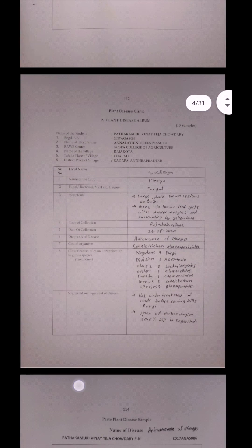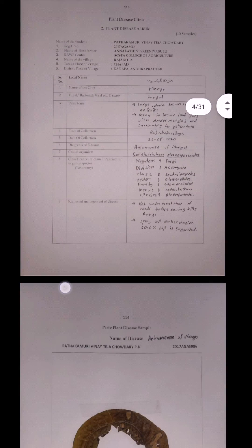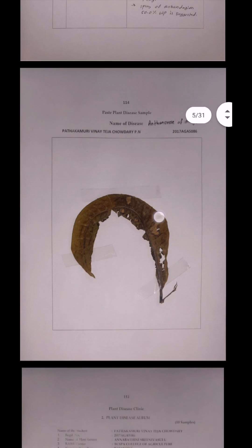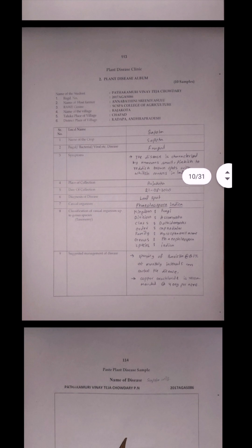I collected the samples about 15 to 20 days earlier and kept them for pressing in a book so that the disease samples can be preserved easily for a longer duration. I have preserved samples the same way, including anthracnose of mango and others. In total, I have collected about 15 samples of diseases from various trees available in the farmers' village.